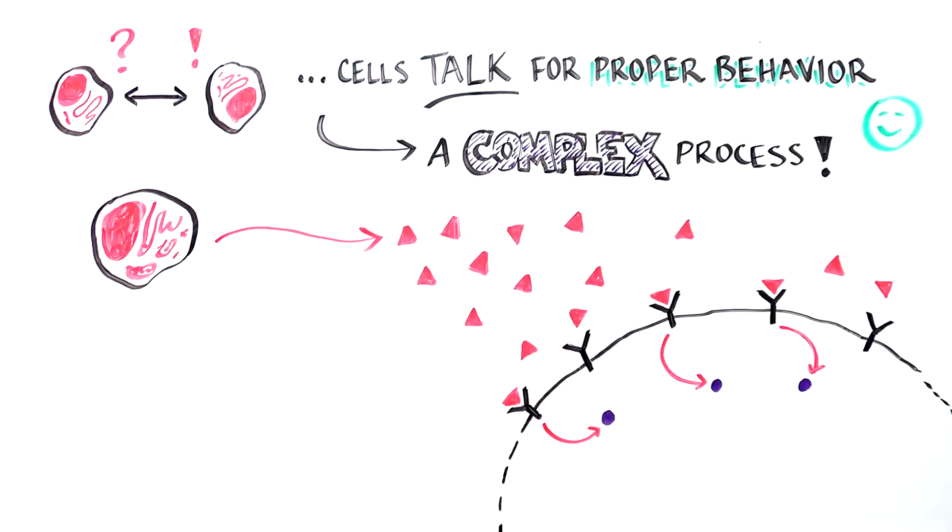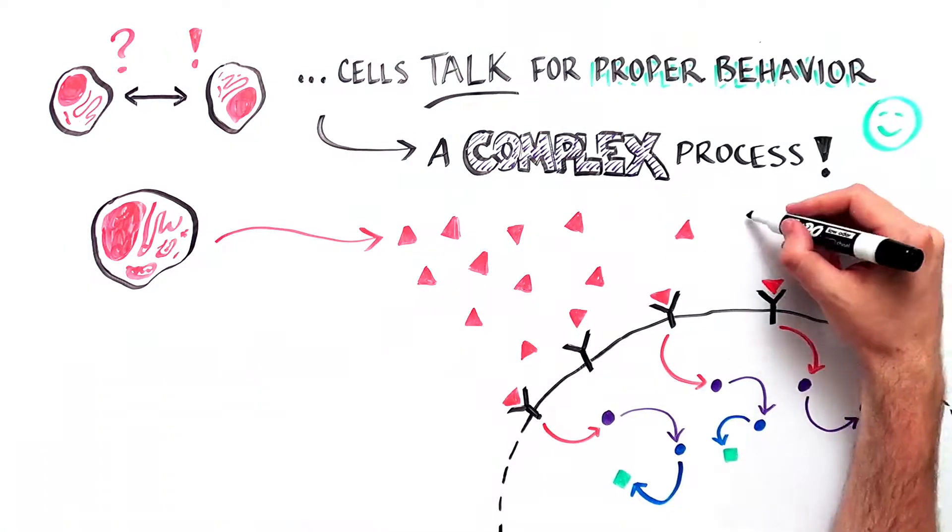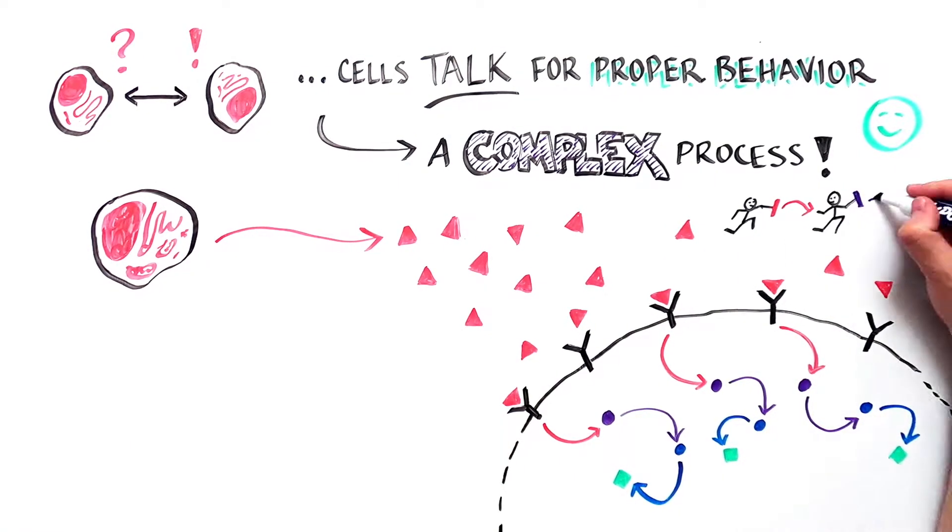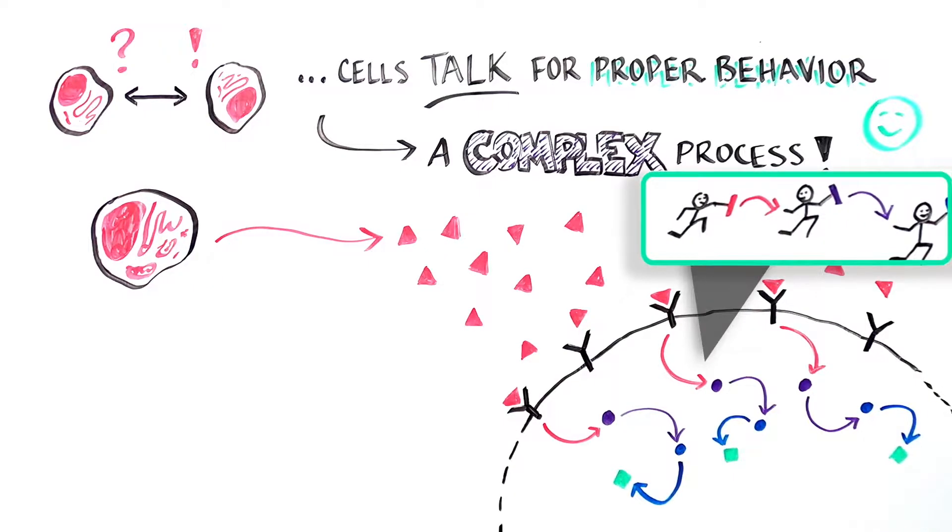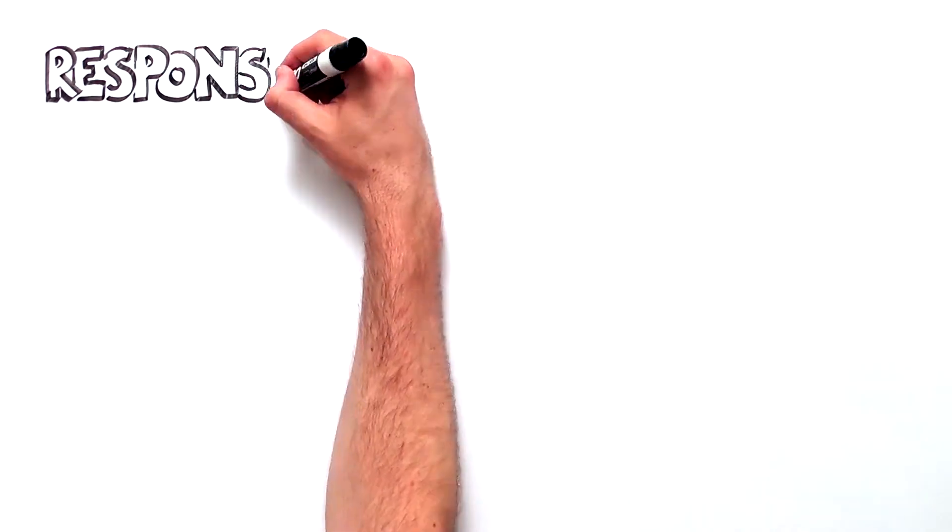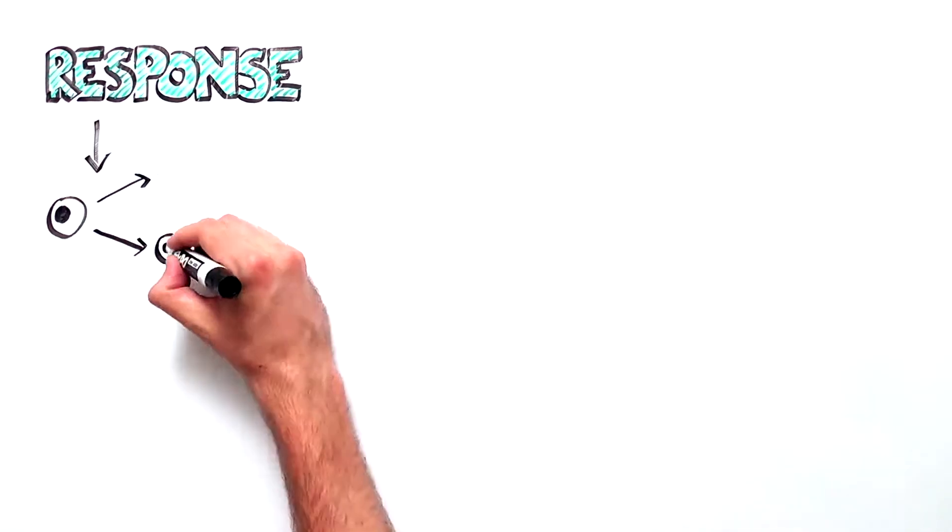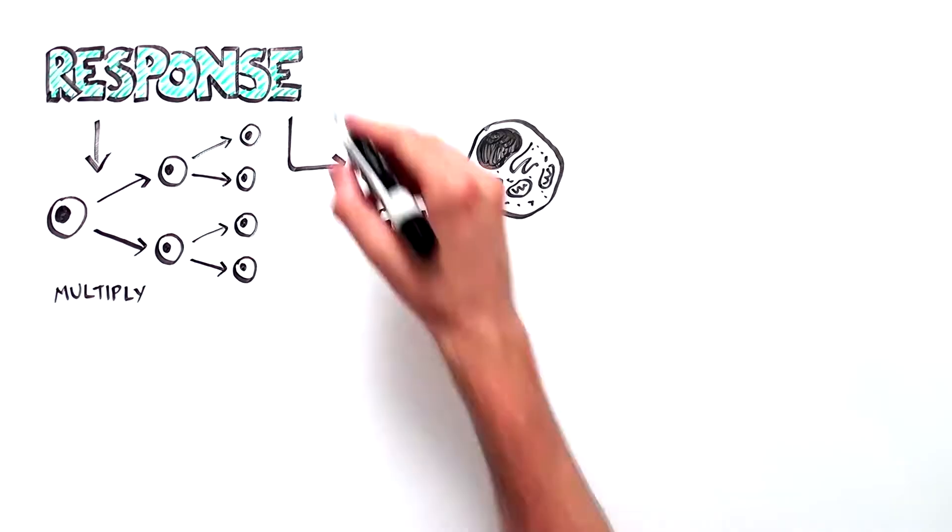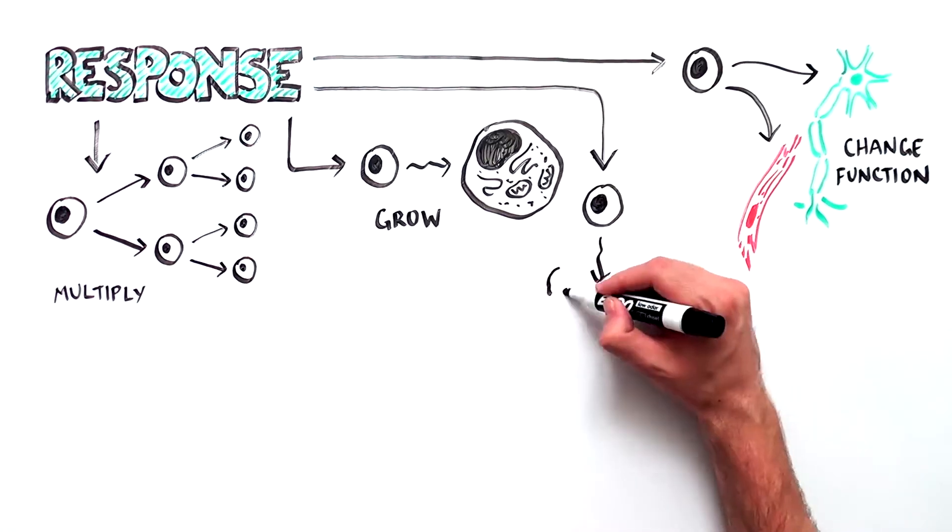If accepted, the information enters the cell and is passed from one protein to the next, like a baton is passed from person to person in a relay race. When the information is received by the final protein in the relay, a response is triggered. The response may be instructions for the cell to copy itself and multiply, to grow, to change its function, or for it to die.